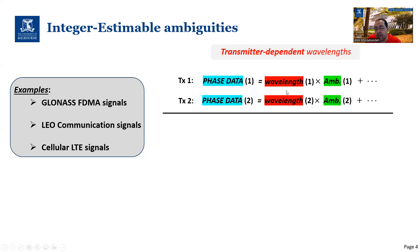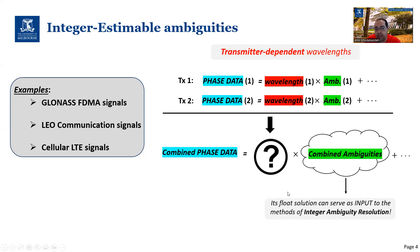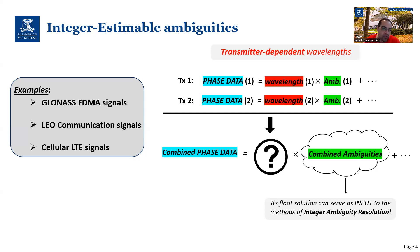For such cases, clearly we have different wavelengths for different phase data, and therefore the ordinary double differencing fails to deliver admissible inputs to the method of integer ambiguity resolution. This is the goal of our present paper: to come up with conditions and tools to form certain combinations of integer ambiguities whose float solution can then serve as valid input to the method of integer ambiguity resolution.